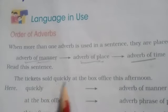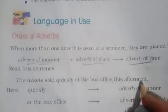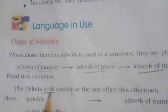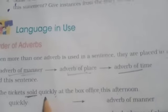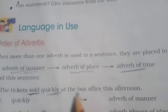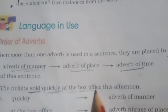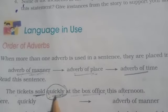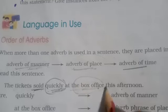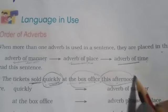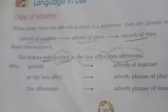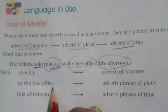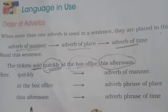They have given one example here: 'The ticket sold quickly at the box office this afternoon.' The ticket sold — kaisi? Quickly, jaldi se — adverb of manner. Kahan pe? At the box office — adverb of place. Kab? This afternoon — adverb of time. So the order is: manner (how), then place (where), then time (when). Here: 'quickly' is adverb of manner, 'at the box office' is adverb phrase of place, and 'this afternoon' is adverb phrase of time.